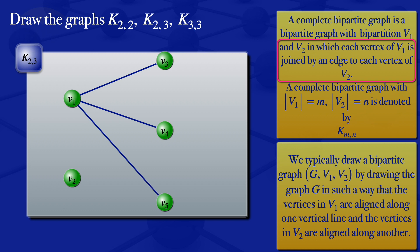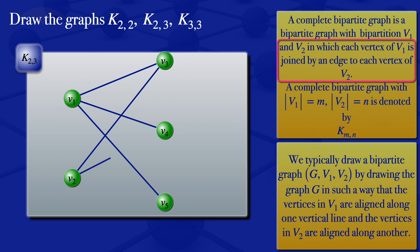Then moving to vertex V2, we draw edges between V2 and all vertices in the second subset: V2 with V3, V2 with V4, and V2 with V5. So we have each vertex of subset V1 joined by an edge to each vertex of V2 — that's the complete bipartite graph K2,3.